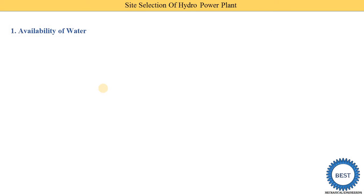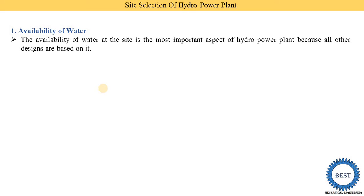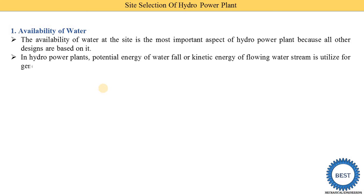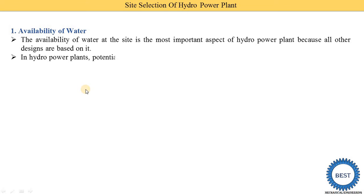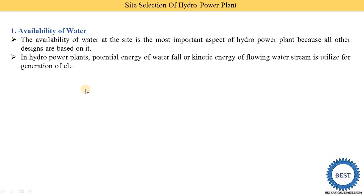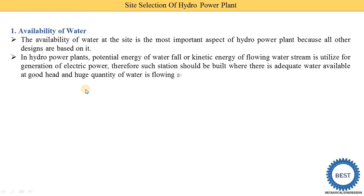First point is the availability of water. The availability of water at the site is the most important aspect of a hydropower plant because all other designs are based on it — without water we are not able to run the hydropower plant. On the basis of availability of water, other factors are designed. In a hydropower plant, the potential energy and kinetic energy of flowing water is utilized for generation of electric power.